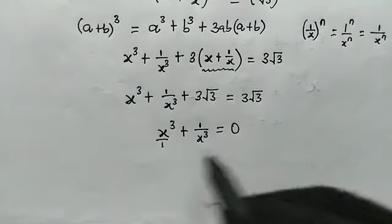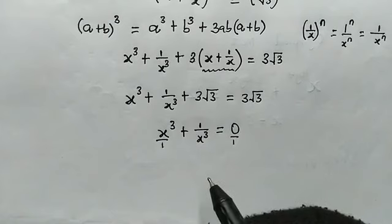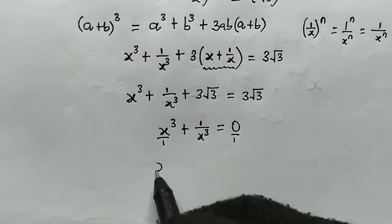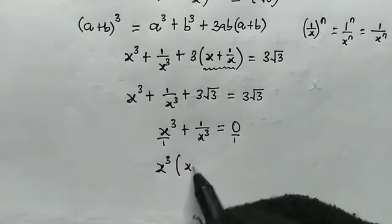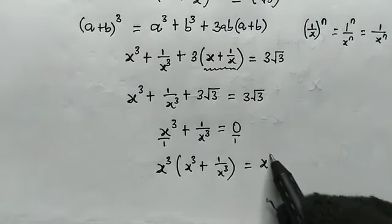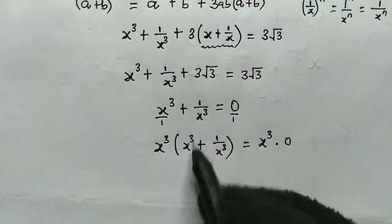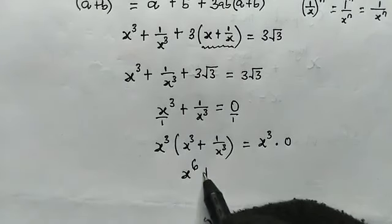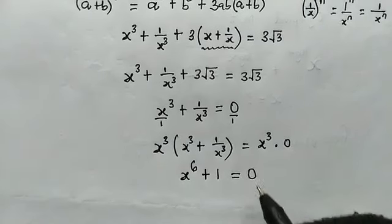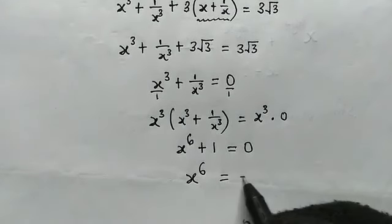So we have x cubed plus 1 over x cubed equals 0. We multiply both sides of this equation by x cubed. Splitting: x cubed times x cubed is x to the power of 6, plus x cubed times 1 over x cubed is 1, equals x cubed times 0, which is 0. Subtracting 1 from both sides, we arrive at the amazing equation: x to the power of 6 equals negative 1.